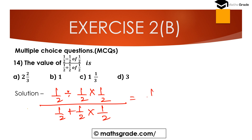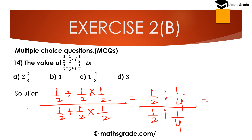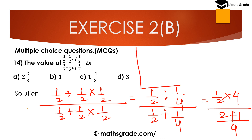Half of half equals 1/2 × 1/2 = 1/4. Now we have half of (1/4) ÷ half. Half of 1/4 means multiply: 1/2 × 1/4 = 1/8. Then dividing by half means multiplying by the reciprocal of 1/4, which is 4. So 1/2 × 4 = 2. Then LCM of 2 and 4 is 4, giving us 2/4 + 1/4 = 3/4.